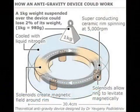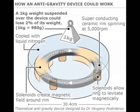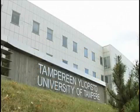In 1992, Dr. Eugene Podkletnov discovered an anomalous gravitational effect while working at a superconductor research laboratory at the University of Tampere in Finland.